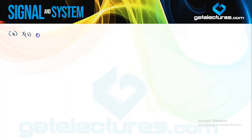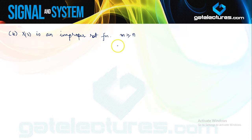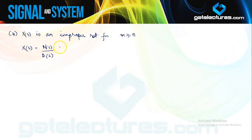If X of S is an improper rational function — what does improper rational function mean? The degree of the numerator is greater than or equal to the degree of the denominator, meaning the number of zeros is greater than or equal to the number of poles. Since the degree of the numerator is more, we can perform long division with the numerator and denominator.